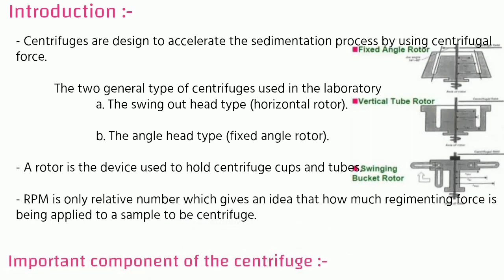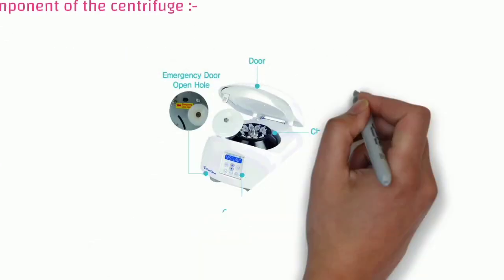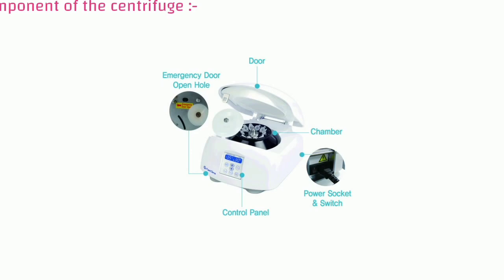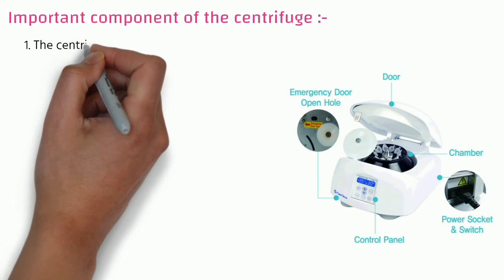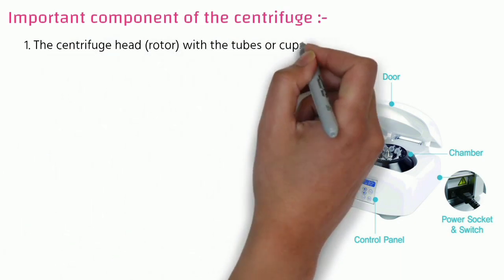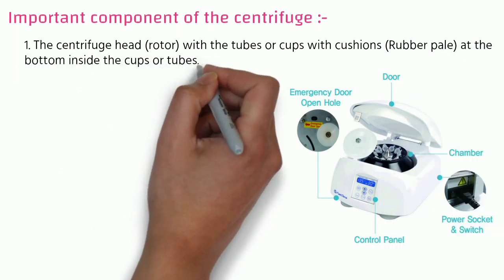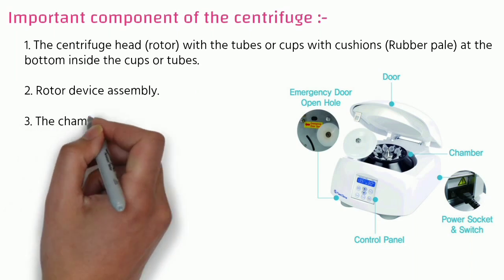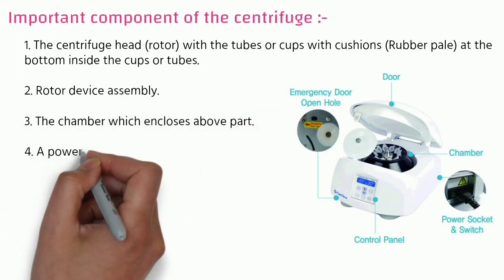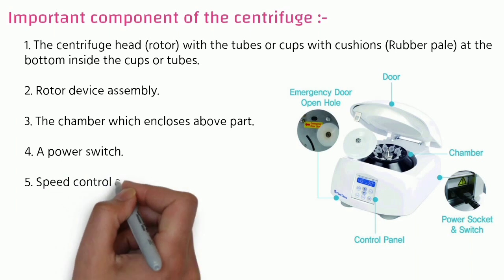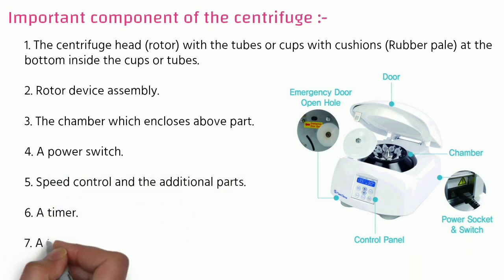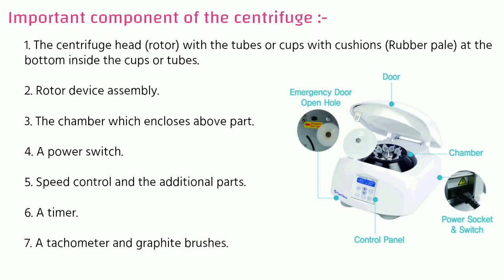The important components of a centrifuge include: the centrifuge head, meaning the rotor with tubes or cups with cushions — where a cushion is the rubber pad at the bottom inside the cup or tube — then the rotor device assembly, the chamber which encloses the rotor part, a power switch, speed control and additional parts such as a timer, a tachometer, and graphite brushes.